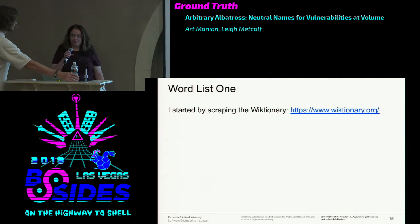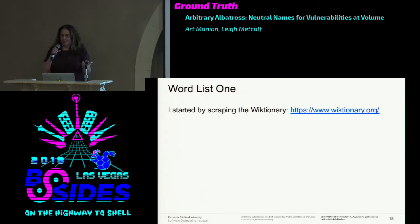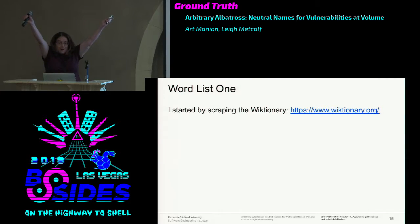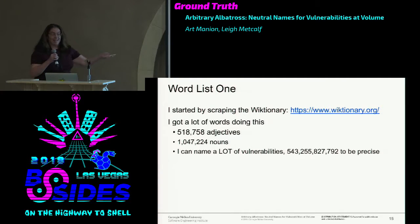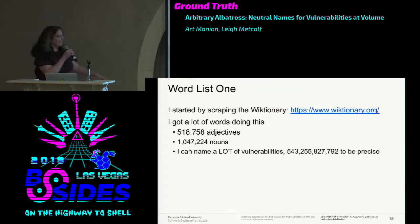This has been one of the most entertaining projects I've ever worked on, seriously. I started with the problem of: forget the math for a moment, I need some words in order to name things. I started by scraping the Wiktionary because that has all the words. I got over half a million adjectives and over a million nouns. That's enough for vulnerabilities—if we have more than that, at that point I really don't care anymore. Hopefully I'm not around to deal with that problem.